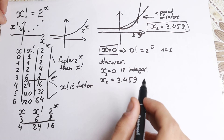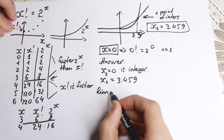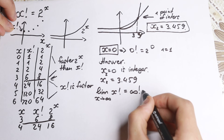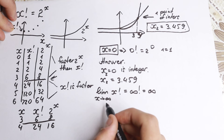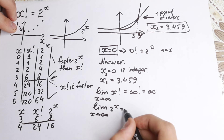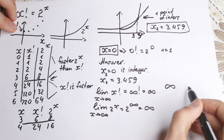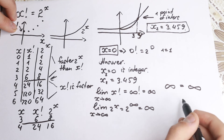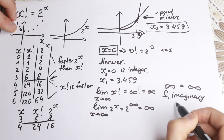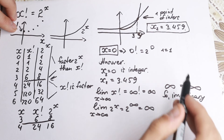Let's also check hypothetical roots. If we take the limit as x approaches infinity of x factorial, we get infinity factorial, which equals infinity. And the limit of 2 to the x as x approaches infinity is 2 to the power of infinity, which also equals infinity. So on both sides we get infinity, suggesting there may be imaginary or hypothetical complex roots at infinity.